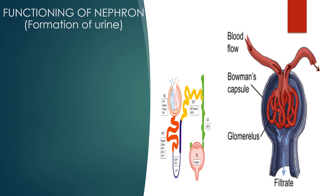After glomerulus filtration, the waste products and the useful products move down from the Bowman capsule. All the nitrogenous waste and the useful things rush into the tubule of the nephron. The filtered blood then moves out of the Bowman capsule through the afferent arteriole, which branches into a fine network of blood capillaries that spread over the nephron tubule.